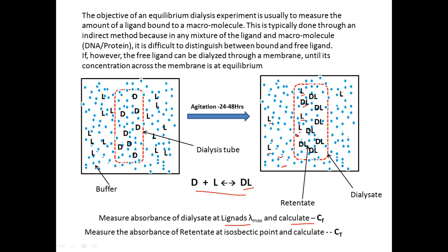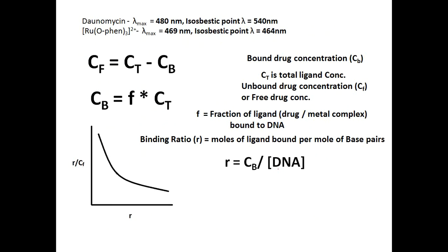If you take the absorbance of the retentate, it will include absorbance of both the free ligand and the DNA-ligand complex. By measuring the absorbance of the dialysate — where only free ligand exists at the same concentration as in the retentate — we obtain cf. Absorbance of the retentate is measured at the isosbestic point, or after dissociating the DNA-ligand complex, to give the total ligand concentration ct. Then cb = ct − cf.